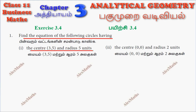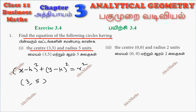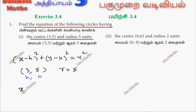Center at (3, 5) and radius 5 units. We have the equation: x minus h whole square plus y minus k whole square equal to r square. So center (3, 5), this is h and k. Radius is 5 units, so r is equal to 5. Substituting into the equation: x minus 3 whole square plus y minus 5 whole square equal to 5 square.